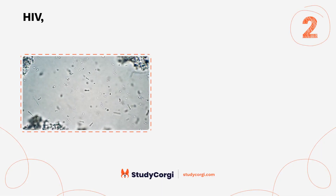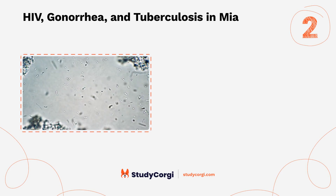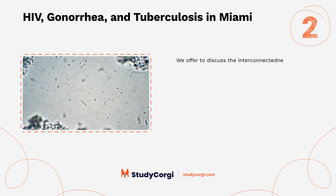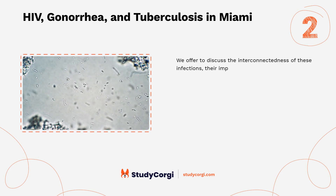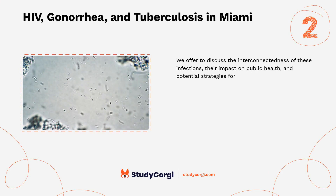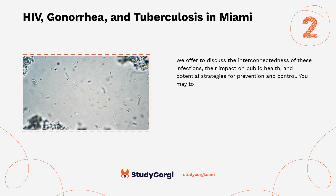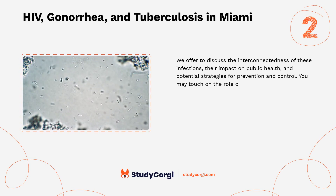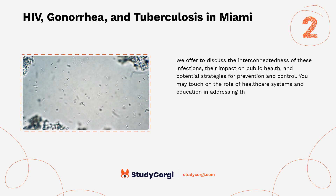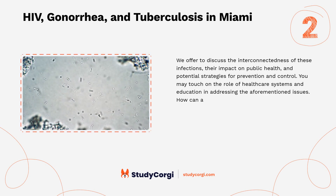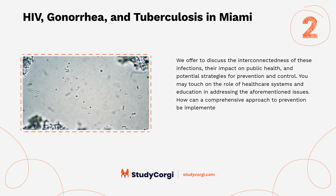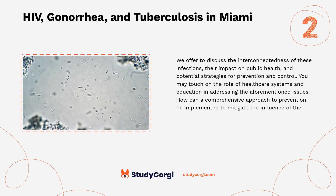HIV, Gonorrhea, and Tuberculosis in Miami: We offer to discuss the interconnectedness of these infections, their impact on public health, and potential strategies for prevention and control. You may touch on the role of healthcare systems and education in addressing these issues. How can a comprehensive approach to prevention be implemented to mitigate the influence of these infections?